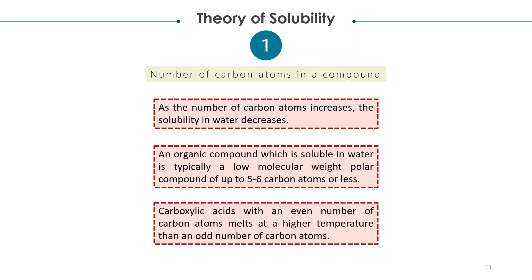The number of carbon atoms in a compound is the second factor in the theory of solubility. As the number of carbon atoms increases, the solubility in water decreases. An organic compound which is soluble in water is typically a low molecular weight polar compound of up to 5 to 6 carbon atoms or less.